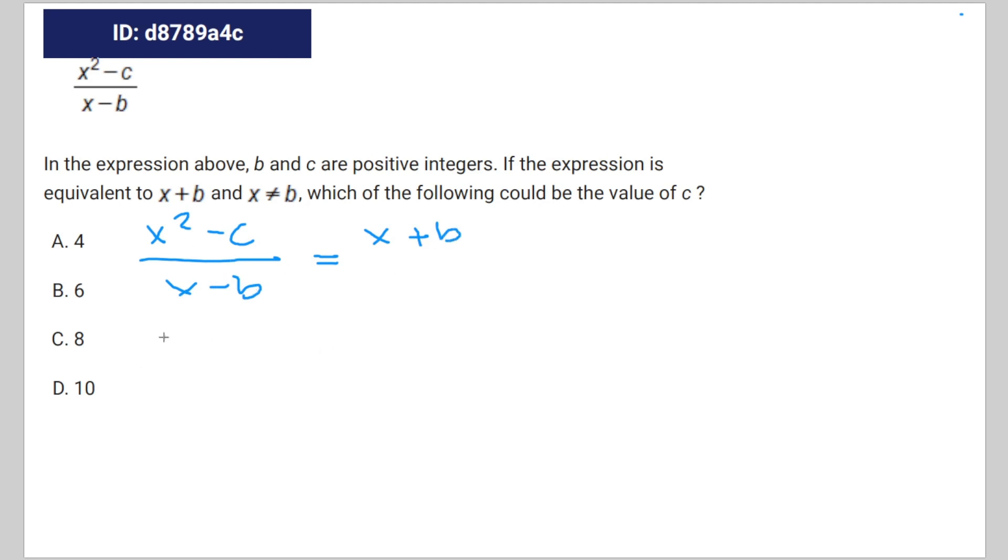Multiply both sides by x minus b, you're going to get x squared minus c is equal to x plus b times x minus b, which you can rewrite like x squared minus b squared.